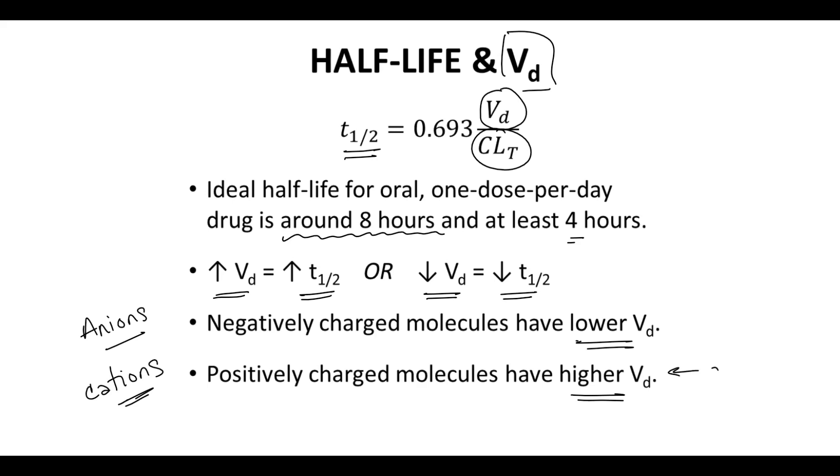Positively charged functional groups, like amines, can increase volume of distribution. Anionic functional groups, like carboxylic acids, which are deprotonated at biological pH, tend to decrease the volume of distribution of a molecule.